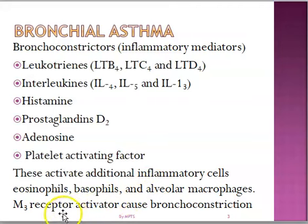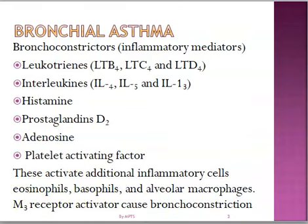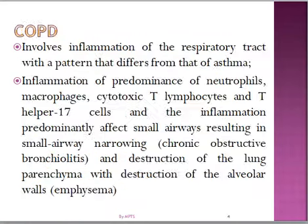We also have the M3 receptor activator which can cause bronchoconstriction. There is a drug which inhibits this — ipratropium — which inhibits the M3 muscarinic receptor found in the bronchial tubule.